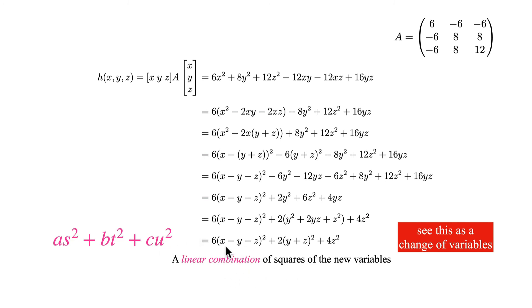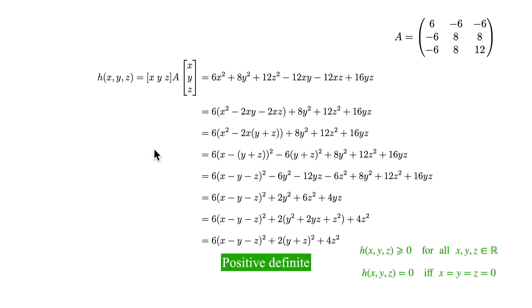This type of sums where you sum some variables with coefficients is called a linear combination. So what we got here is a linear combination of squares of the new variables. Again, see this here as a change of variables from x, y, z to s, t, u. Just some words about the applications. In this quadratic form, if it's written in this way, it can be recognized as a so-called positive definite form. This means that the values of this form are always non-negative, regardless the values of x, y, and z, and are only equal to zero if all the x, y, and z are equal to zero at the same time.